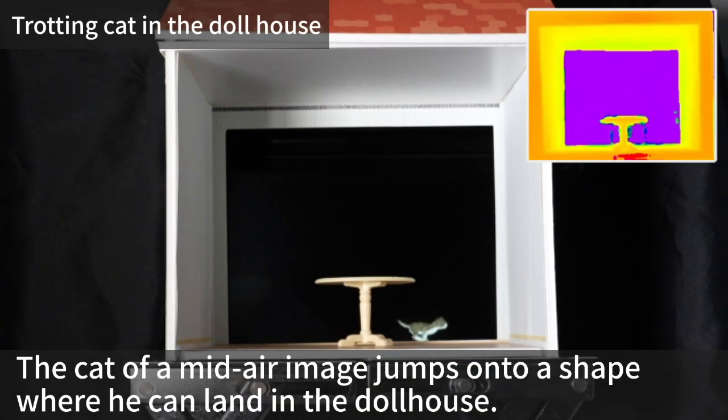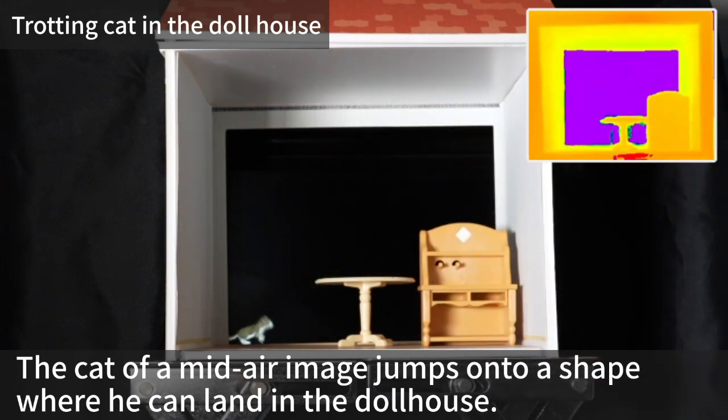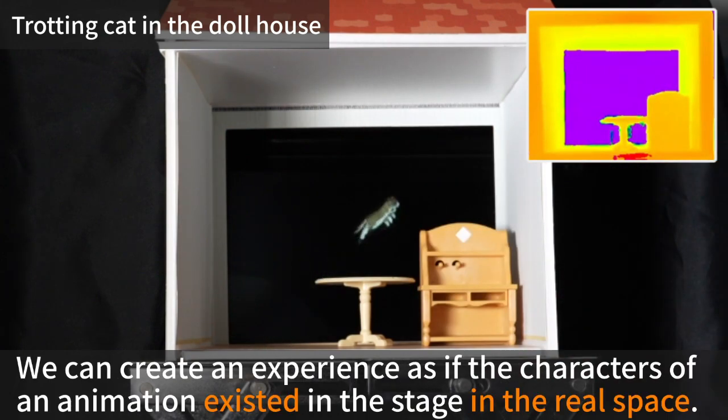The cat of a midair image jumps onto a shape where he can land in the dollhouse. We can create an experience as if the characters of an animation existed in the stage in the real space.